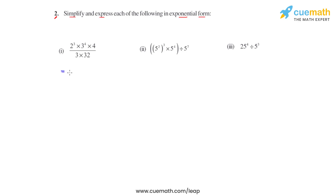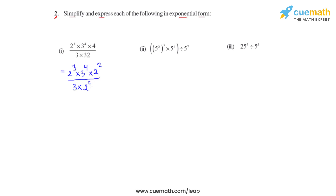In the first bit we have 2 raised to 3, times 3 raised to 4, times 4, divided by 3 times 32. Now 4 is a square of 2, so it can be written as 2 raised to 2. And 32, when prime factorized, can be written as 2 raised to 5.